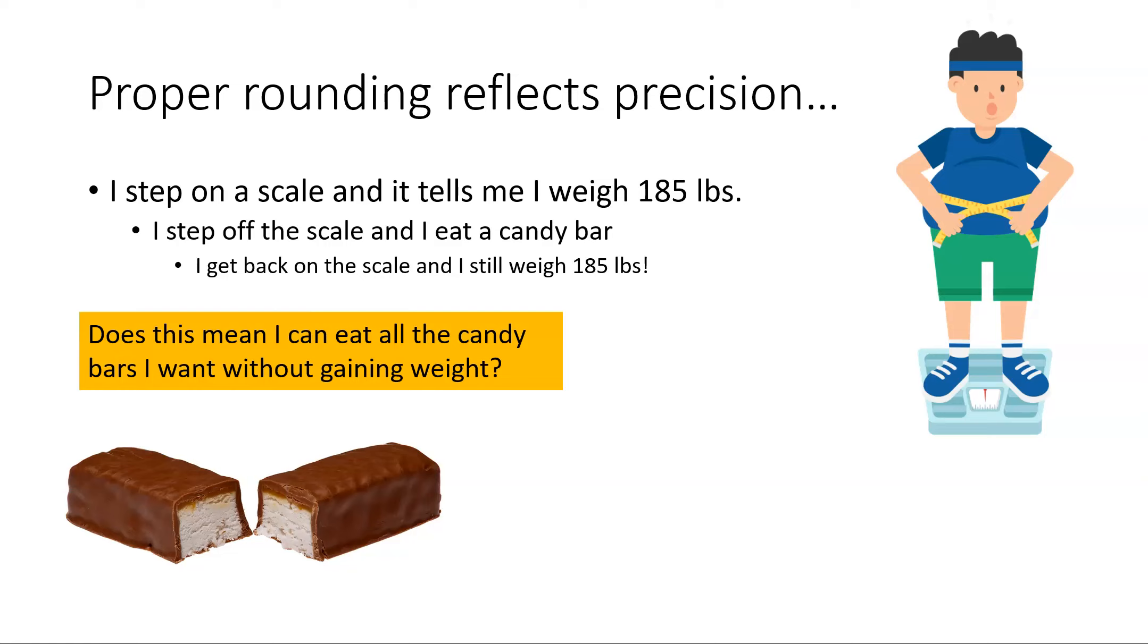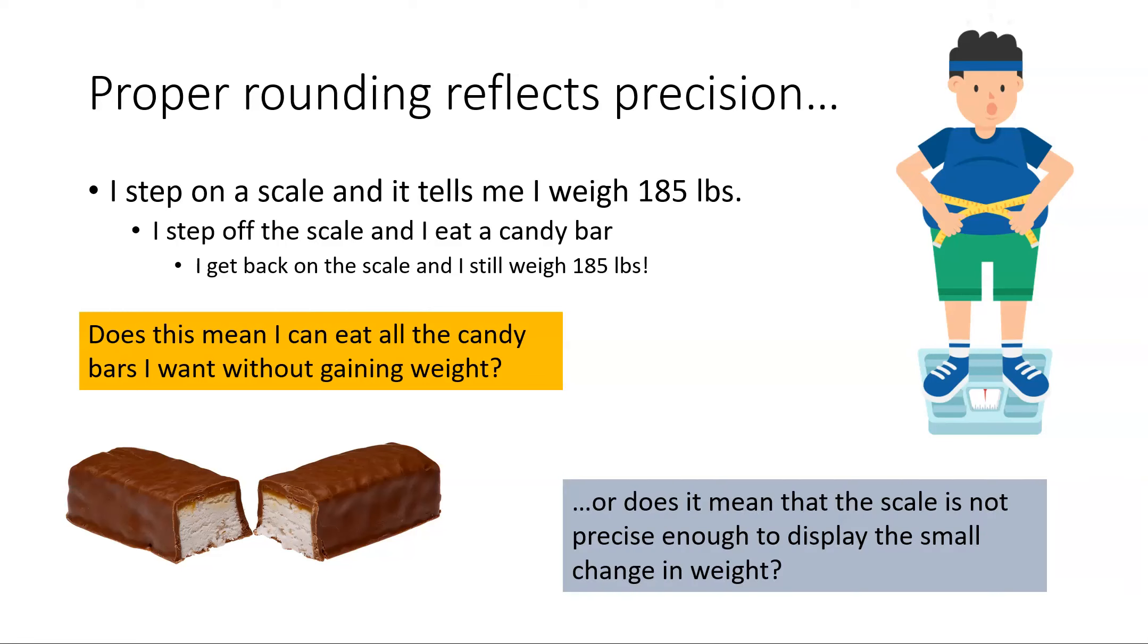So does this mean that I can just eat all the candy bars I want without gaining weight, or does it more likely mean that the scale is not precise enough to display the small change in weight? In reality in science, we have conservation of matter. So when I ate that candy bar, whatever that candy bar weighed added to the weight that I already had. In reality we're probably somewhere down here. It means that scale was not precise enough or sensitive enough to detect that small change in my mass.